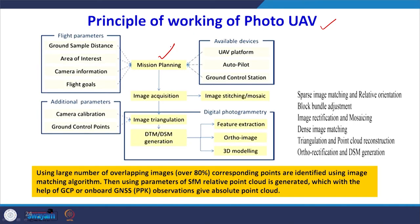When you have photo UAVs, you have a large number of photos. Three major steps are shown: mission planning — you do some flight planning before flying to a particular area — then image acquisition, and third, once you have acquired the images, the triangulation part where you create either a 3D model so that a DTM or DSM is generated, or an orthophotograph. Products include feature extraction, maps, ortho images, or 3D modeling of the area.